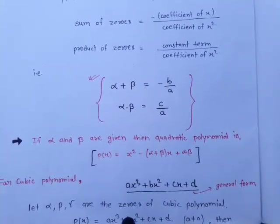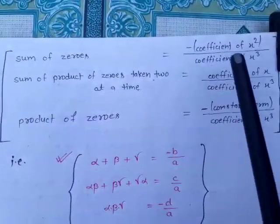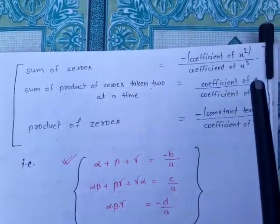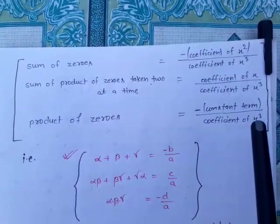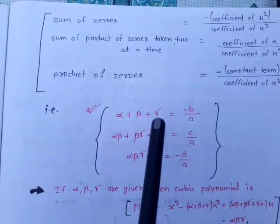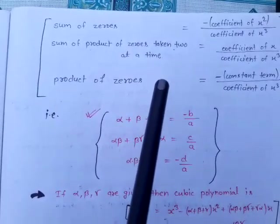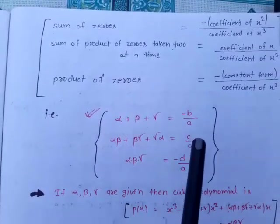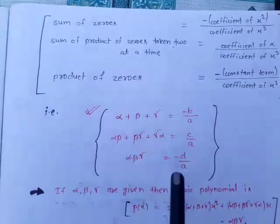For a cubic polynomial we have three patterns. First, sum of zeros: alpha + beta + gamma = –b/a, that is minus coefficient of x² upon coefficient of x³. Second, sum of product of zeros taken two at a time: alpha·beta + beta·gamma + gamma·alpha = c/a. Third, product of zeros: alpha × beta × gamma = –d/a, that is minus constant term upon coefficient of x³.